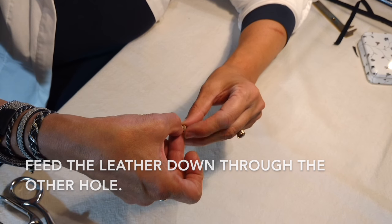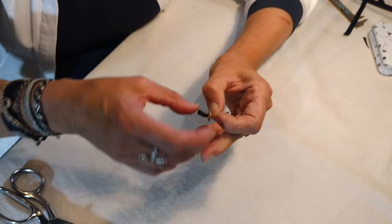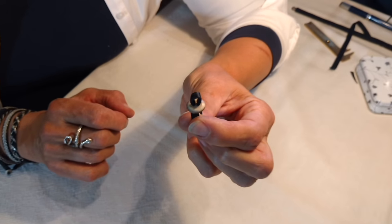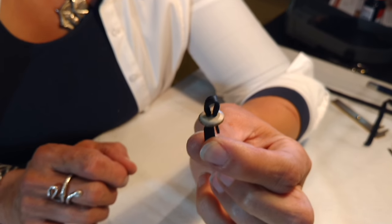Feed the point of your leather strip down to the opposite side and pull. You should have a loop that looks like this.